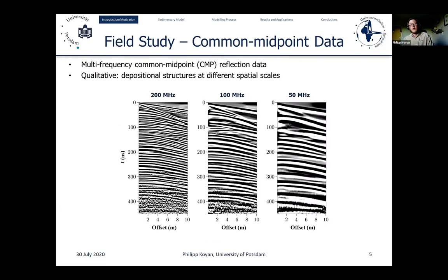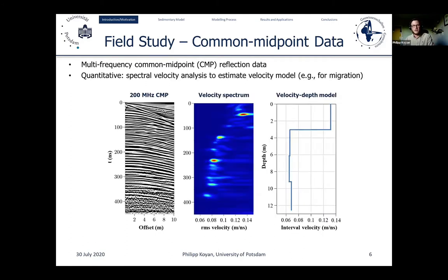To complement common offset data, we also perform CMP measurements — common midpoint data. Comparing them qualitatively, using different frequencies also in this configuration helps resolve depositional structures at different spatial scales. To analyze CMP data more quantitatively, we perform spectral velocity analysis to estimate a velocity model for migration. The velocity spectrum of the 200 MHz CMP illustrates a two-layer case with a sharp velocity contrast at around three meters depth, coinciding with the groundwater table at Spiekeroog.